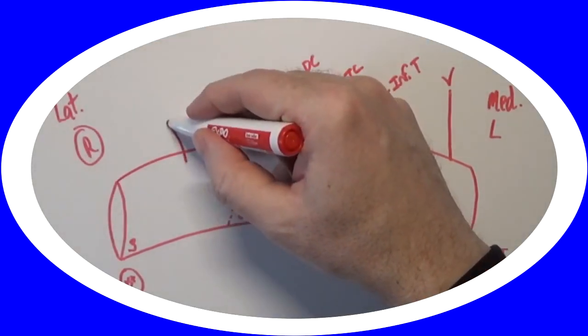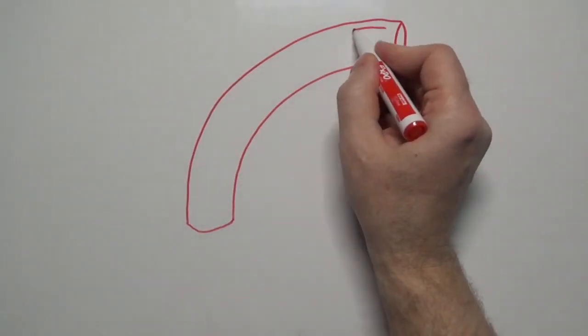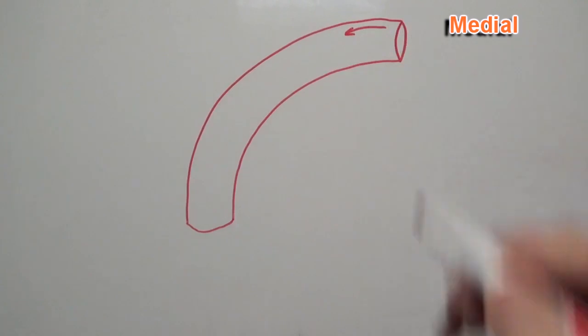For a link to my subclavian artery video, check the description below. Since this is a right axillary artery, blood is going to flow in this direction, from medial to lateral.